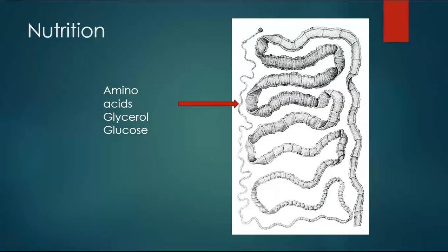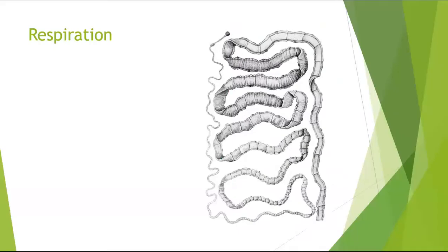So that was the mode of nutrition in Taenia solium. Now for the second aspect: respiration. Respiration means the uptake of oxygen and release of carbon dioxide. Since Taenia lives inside the intestine of man, there is no oxygen in the intestine, meaning the environment is anaerobic. Therefore, Taenia performs anaerobic respiration.